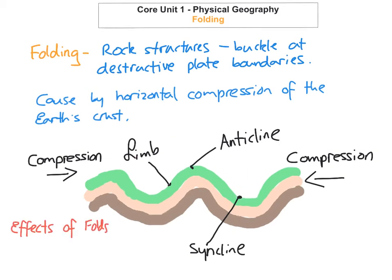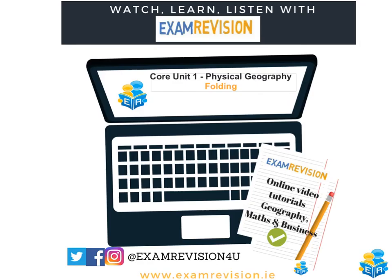One thing to note is that the effects of folding at destructive plate boundaries depend on two things. The first is the force — the more force that's exerted on the rocks, the more folding will take place. The second is the characteristics of the rock, for example the hardness. If the rock is really hard, there'll be less folding; if the rocks are soft, there'll be more folding.